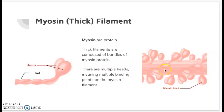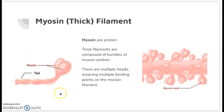On the right side we have a visual representation of what the thick filament looks like. As you can see, it is composed of various bundles, and on the left side we have one bundle of myosin protein. You can see that the bundle has multiple heads on it, and those are the ones that bind to the myosin binding site on the actin filament.